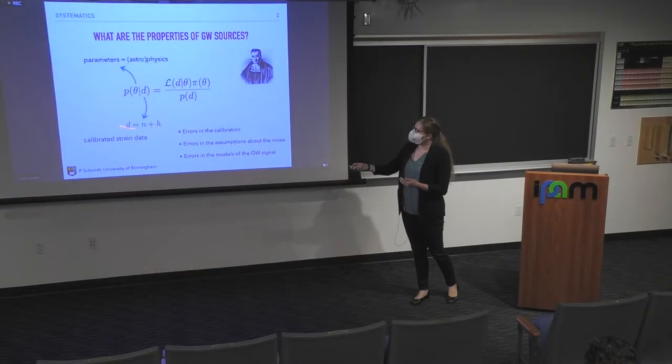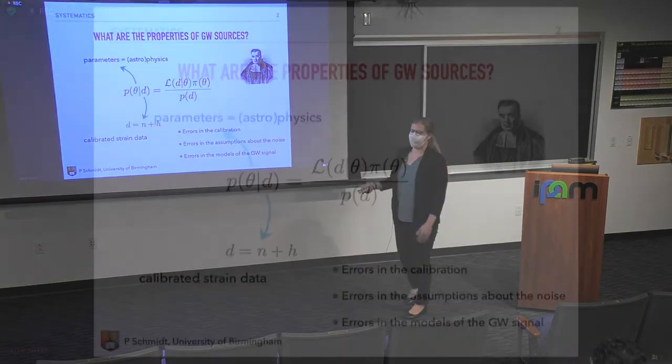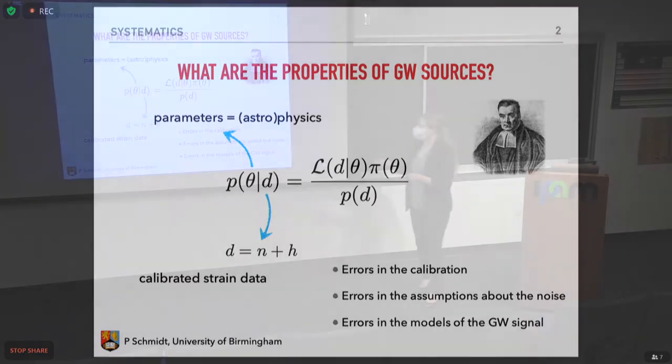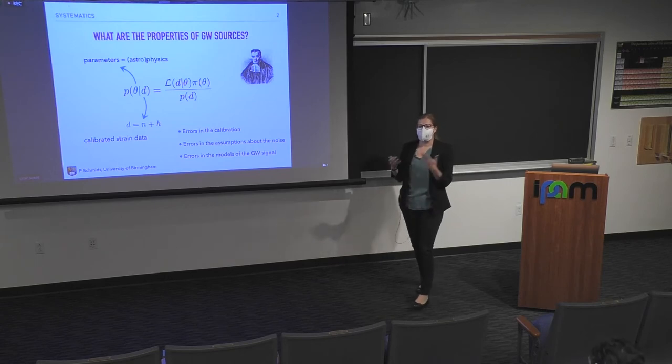We also have here, if you look back at the beautiful talks we've seen this week, our data consists of some noise and hopefully a gravitational wave signal. Now, Tyson laid out very beautifully that we make a lot of simplifying assumptions when we describe the detector noise. The detectors don't always behave that beautifully and that trivially as we like to often assume when we actually evaluate the likelihood function.